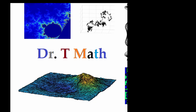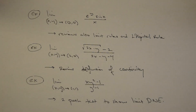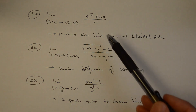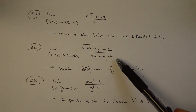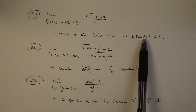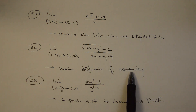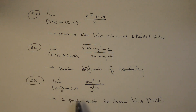Welcome to Dr. T Math. I hope that you enjoy the video. In this video, we'll study three examples. In the first two examples, the limit is shown to exist, and a review is given covering some limit rules and L'Hôpital's rule, as well as the definition of pointwise continuity. Then, an example will be shown where the limit does not exist, and this will be demonstrated by the two-path test.